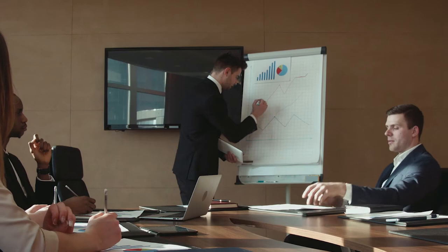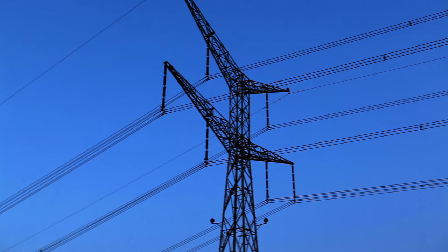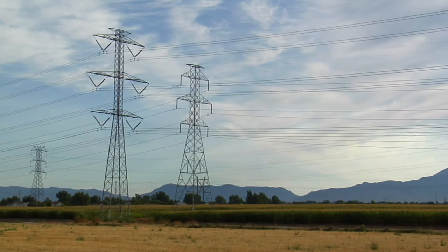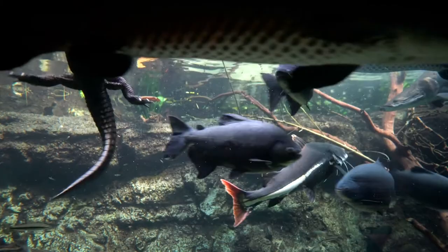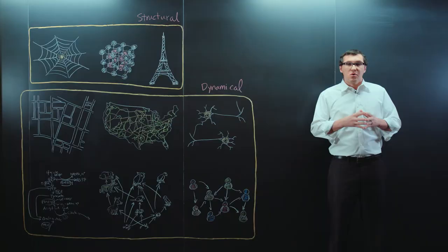For example, in a network of people deliberating on an issue, how does the convergence to consensus depend on the details of the network of interactions? In our power grid, where collections of power generators need to be in pace at approximately 60 Hz, how does the stability of the synchronous state depend on the particulars of how the power lines are connected with each other? Or how do the populations of the various species in an ecosystem depend on the specifics of their feeding relationships?